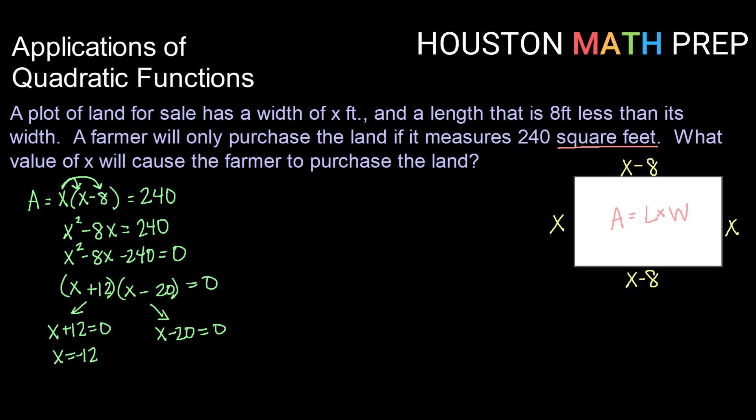So x = -12 feet is a solution and x = 20 feet is a solution. Now one of those might have sounded a little odd to you. Negative 12 feet—that doesn't really make any sense. When it comes to application problems, there will sometimes be solutions that don't work in the context of the problem.